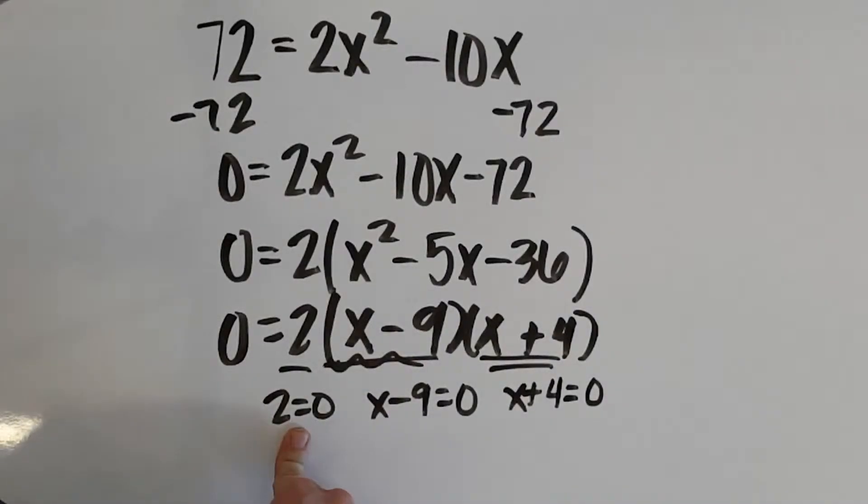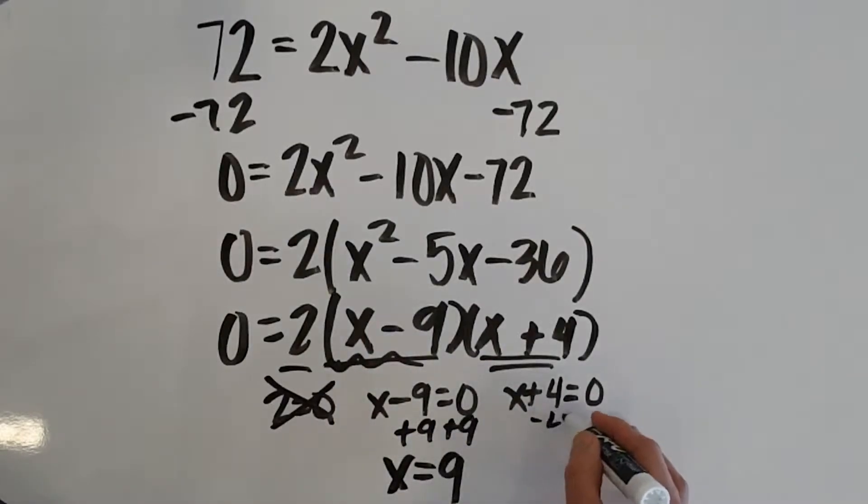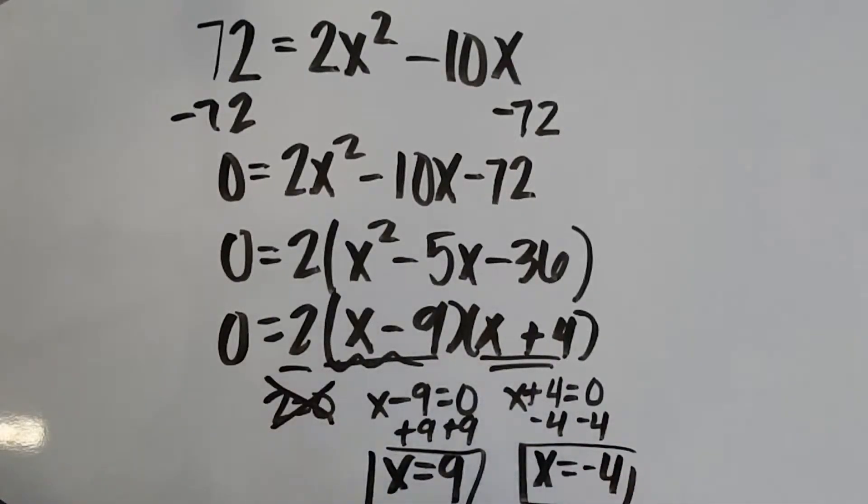Well, in this one, 2 equals 0. That doesn't give me a value of x to solve for. So, there's no value to actually solve for here. But if I solve this second factor, add 9 to both sides, I get x equals 9. If I solve this last one, I get x equals negative 4. So, my two answers would be 9 and negative 4.